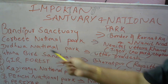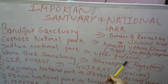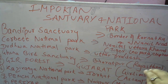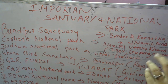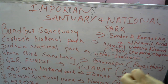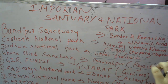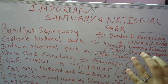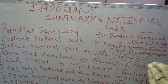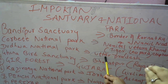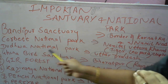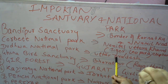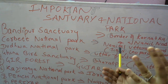Dudhwa National Park is situated in Uttar Pradesh. Lakhimpur is a place in Uttar Pradesh where Dudhwa National Park is found. Dudhwa National Park is famous for Tigers and Elephants. So: Dudhwa National Park is located in Uttar Pradesh, in the Lakhimpur area, and it is famous for Tigers and Elephants.